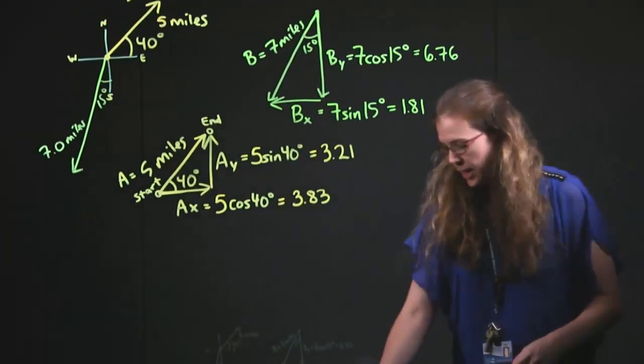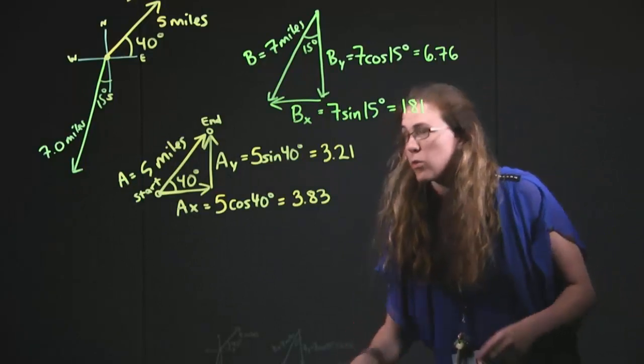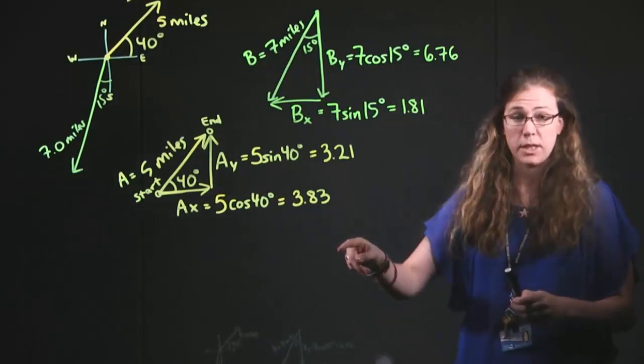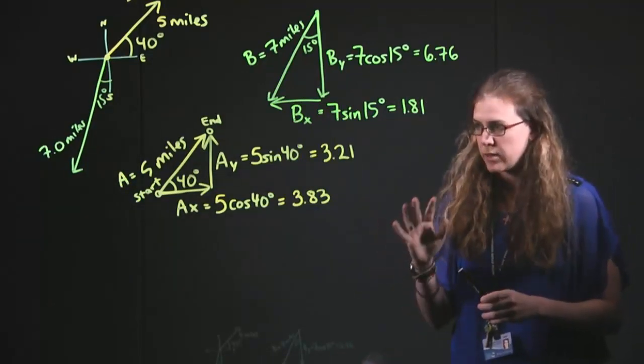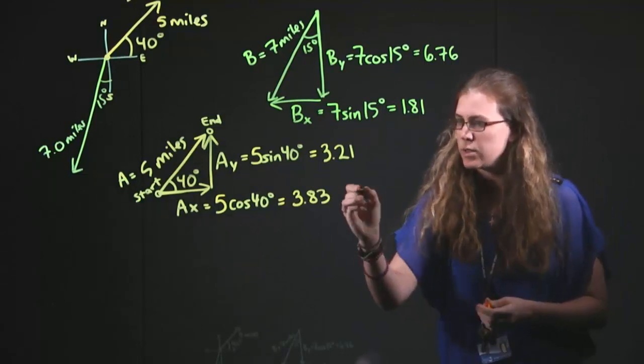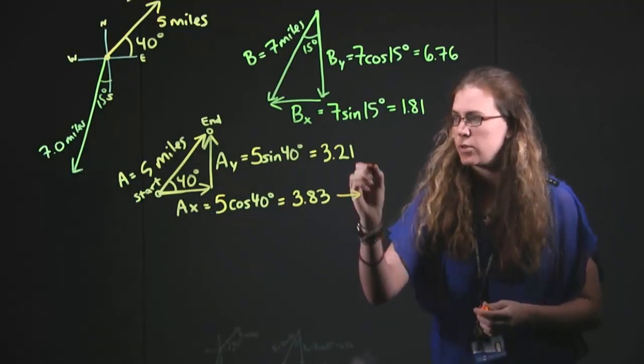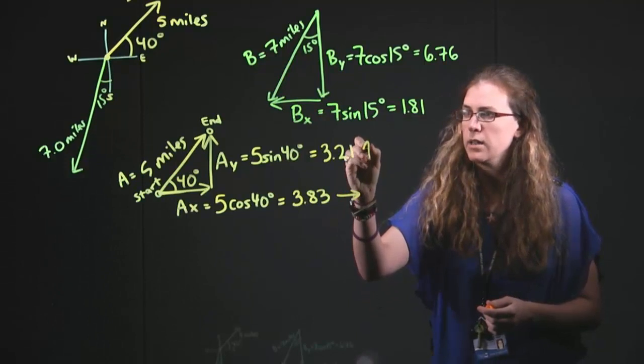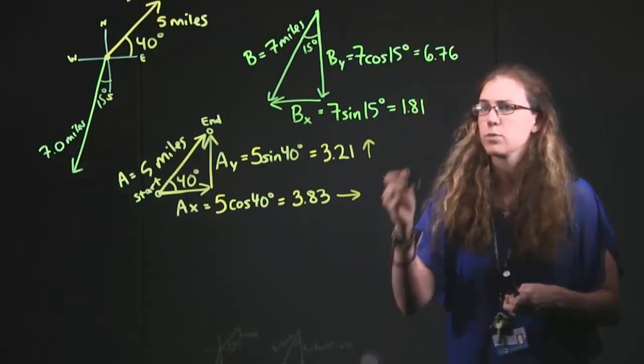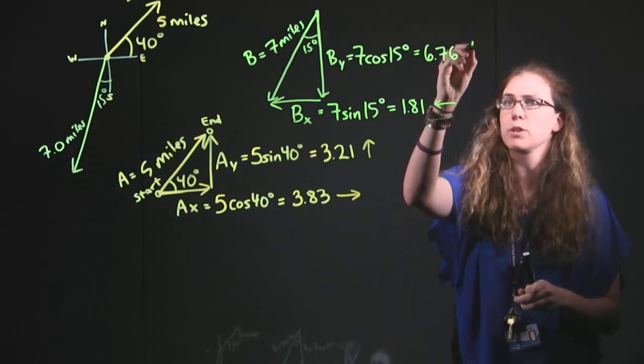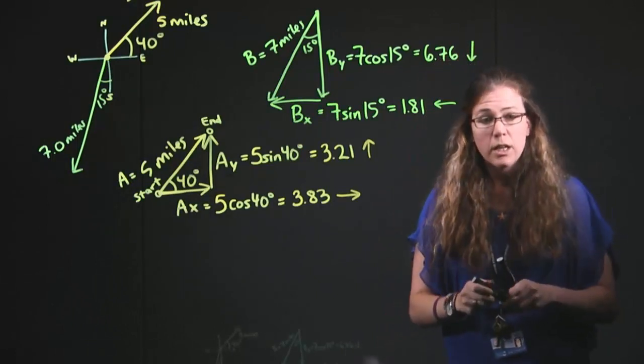Movie magic. All right. So, now that we have all four of these pieces, we want to make sure that we have a sense of what direction they point. I like to write it just right next to it. So that one's pointing to the right, that one's pointing up, this one's pointing to the left, and this one's pointing down.